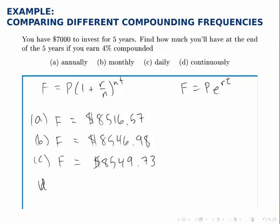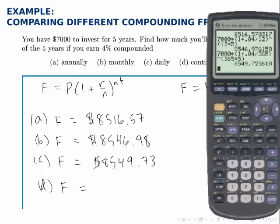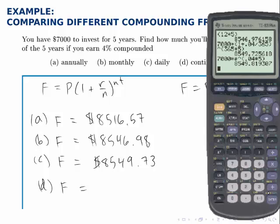Finally, for part d, we switch over to the other formula, and we calculate F equals Pe^(rt). So 7,000p times e to the r, .04, times t, 5. And we find that that last account holds $8,549.82 at the end of the five years.